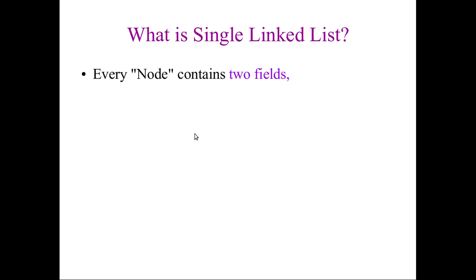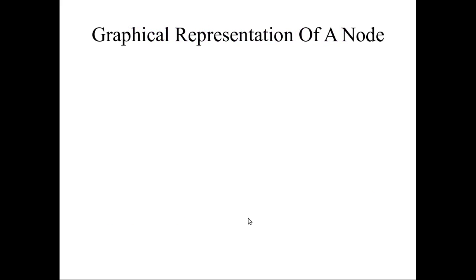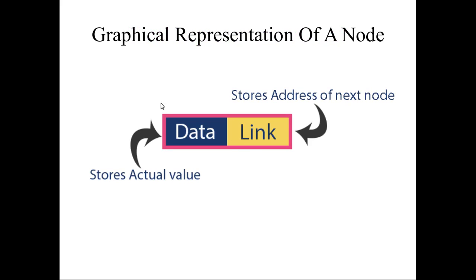Every node contains two fields: one is the actual data field, and another is the next field, which stores the address of the next node. The data field stores the actual data, and the next field stores the address of the next node. Here is a graphical representation of the node structure showing these two fields.